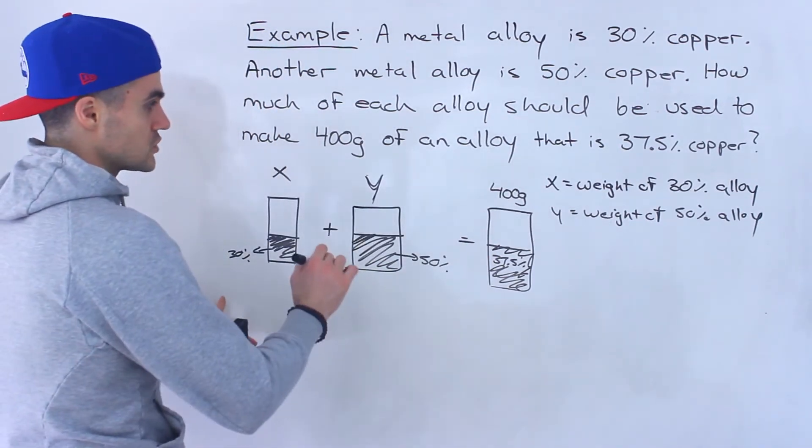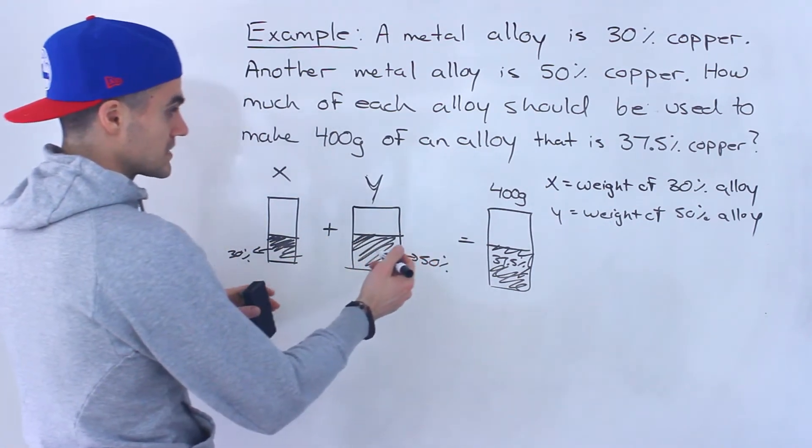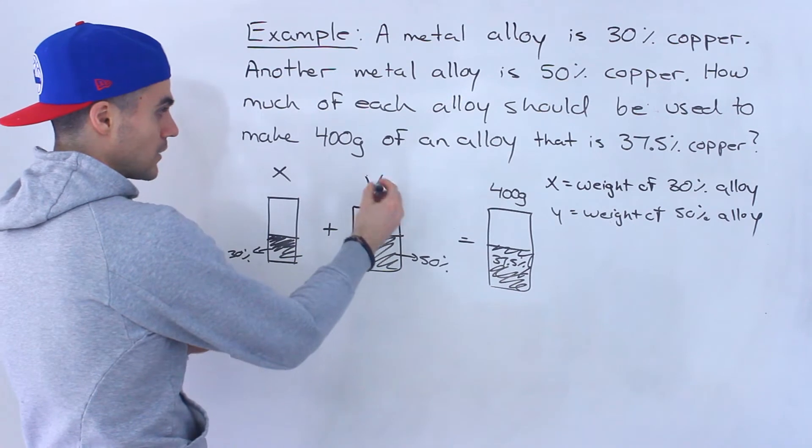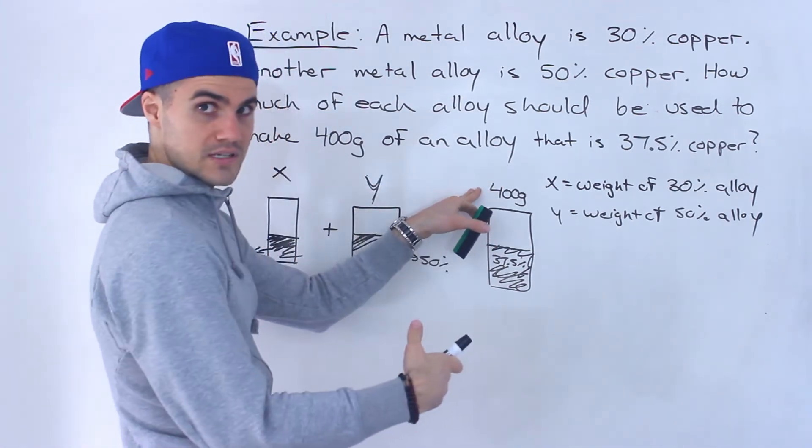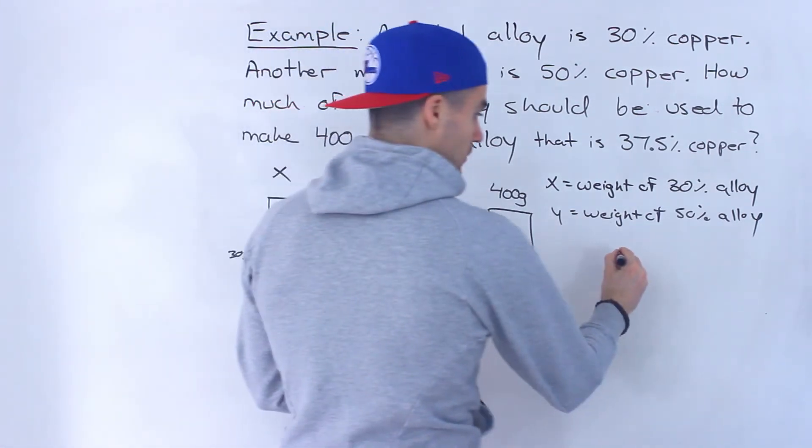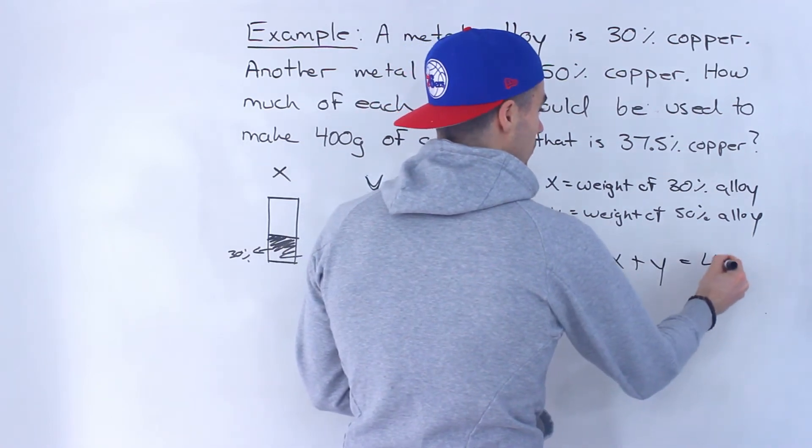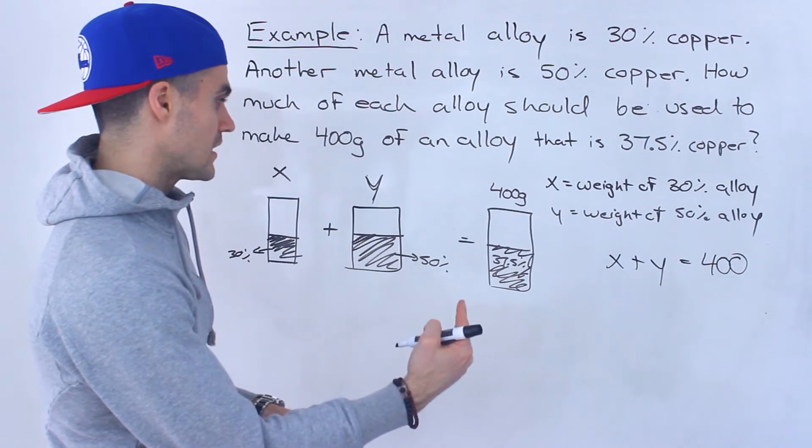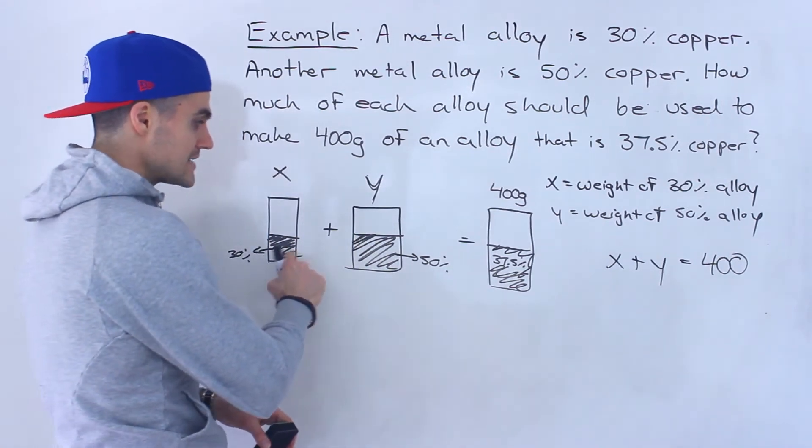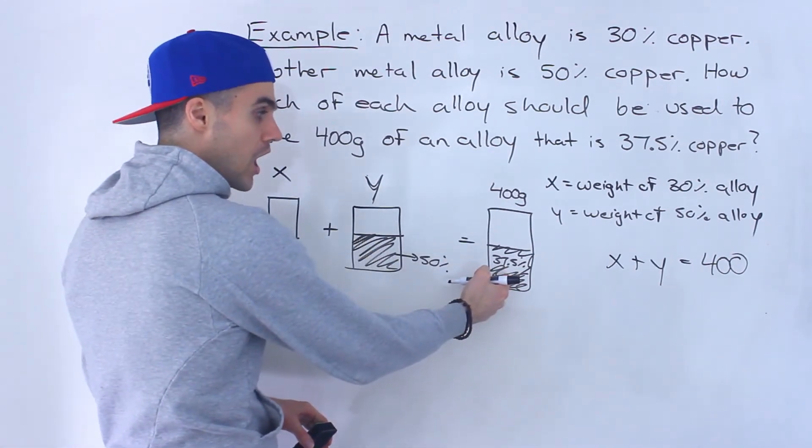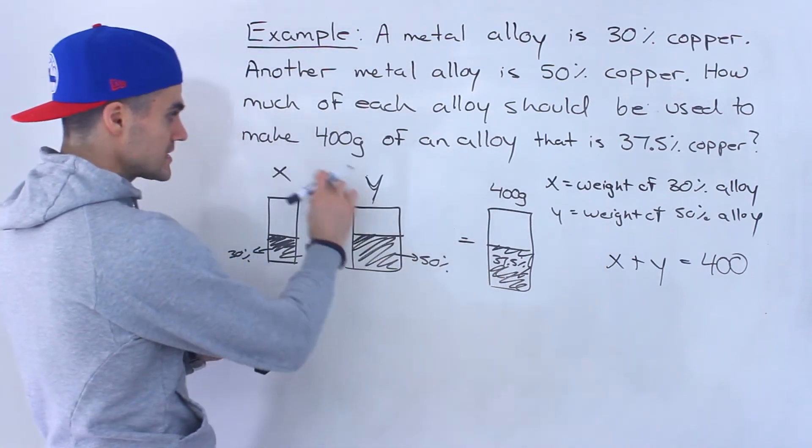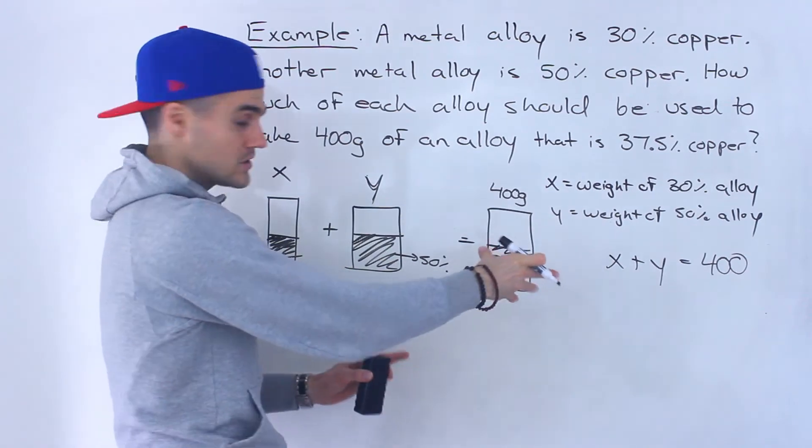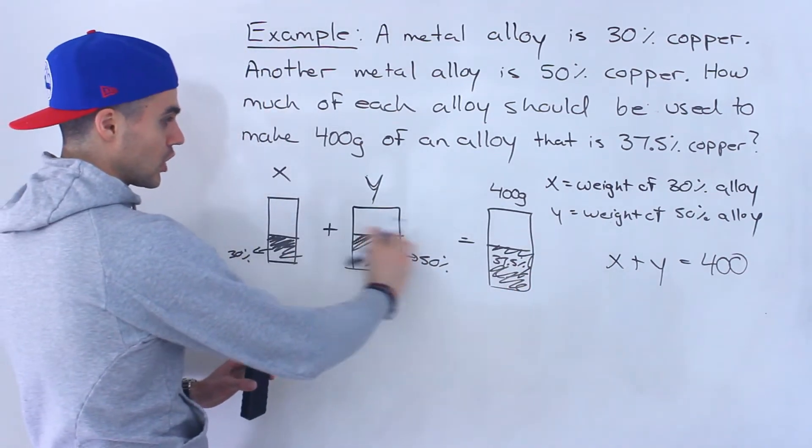So what we can do is set up two equations here. The first equation that we can set up is just the total weight. If this has a weight of x and this has a weight of y and then when we combine them it's gonna have a weight of 400. So we know that x plus y is equal to 400. The next equation that we can make is the weight of the copper.